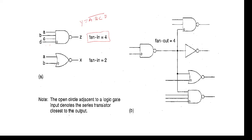Similarly, if you take an XNOR gate, only two inputs are there, so the fan-in is equal to two. Coming to fan-out, this gate can drive four outputs — first gate, second gate, third gate, and fourth gate — so fan-out equals four. To summarize: the number of outputs a gate can drive is called fan-out, and the number of inputs for a gate is called fan-in.